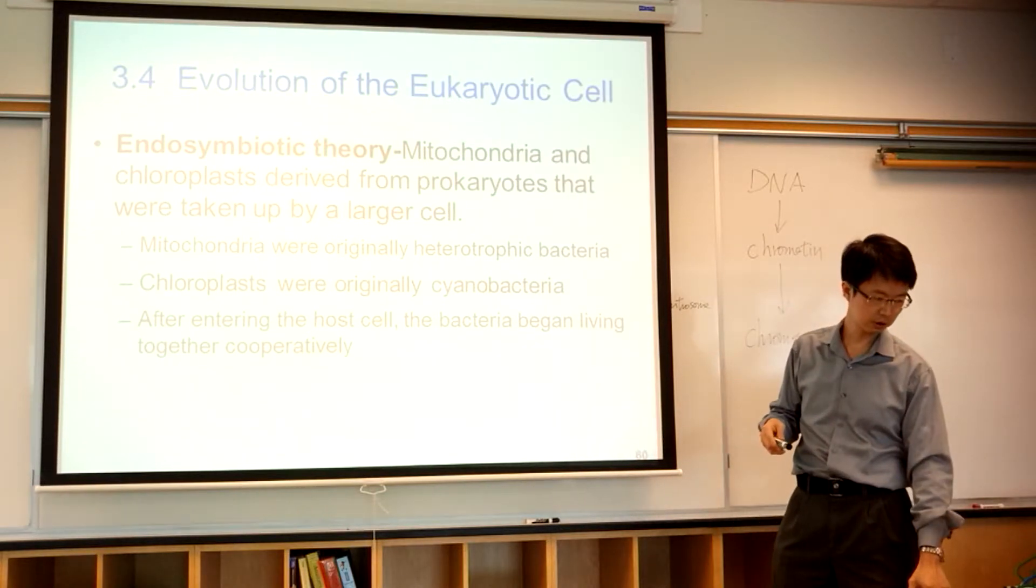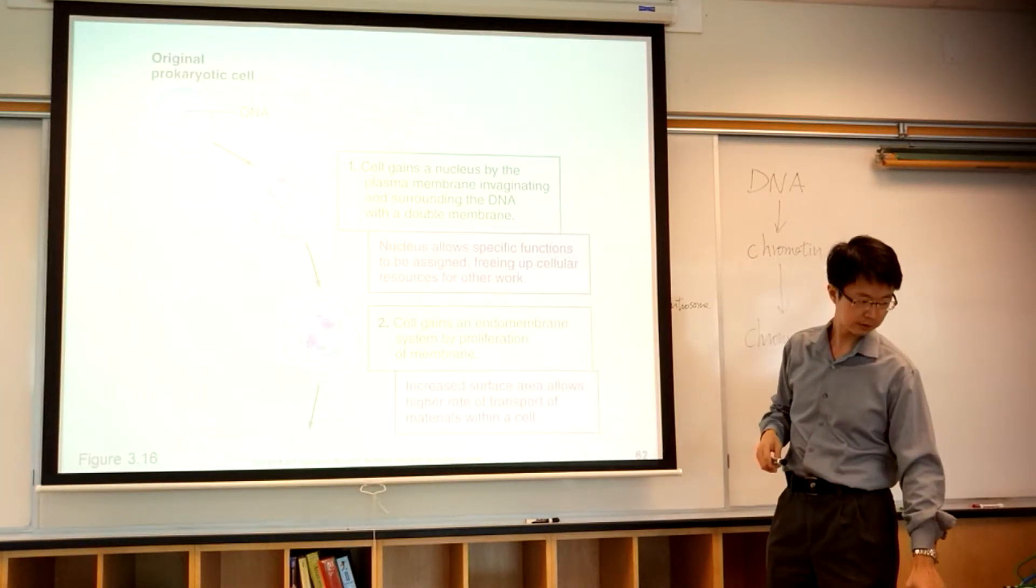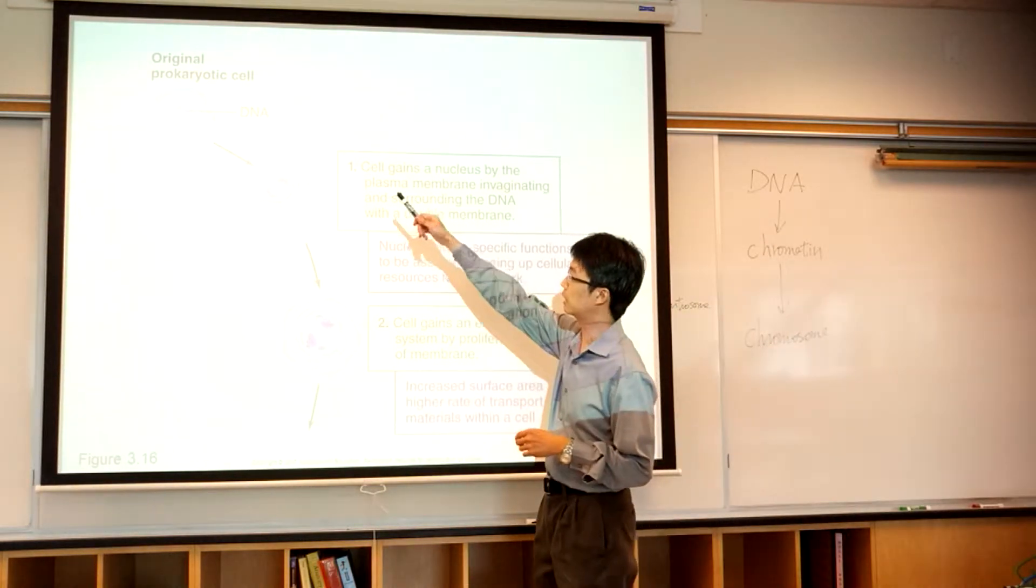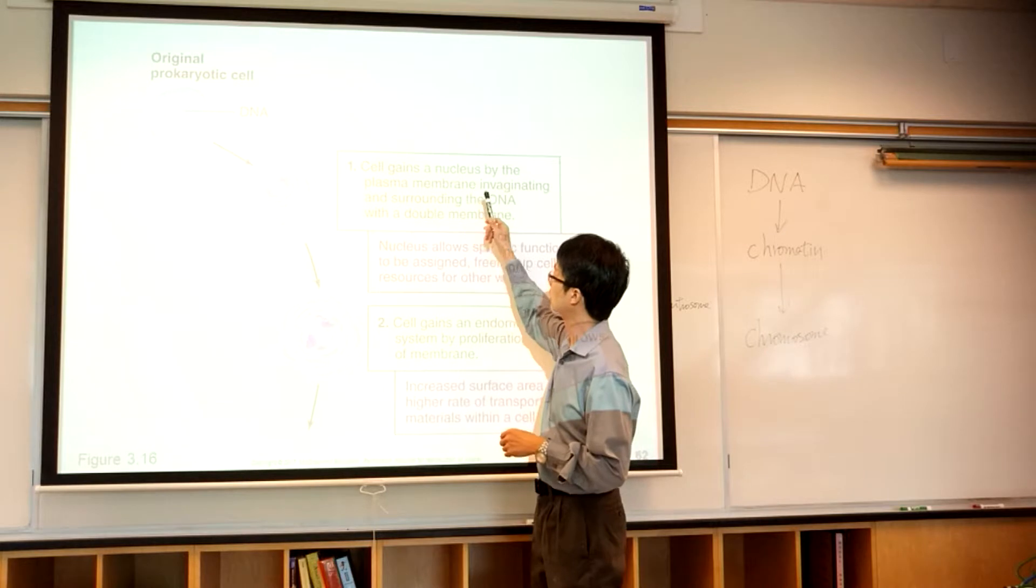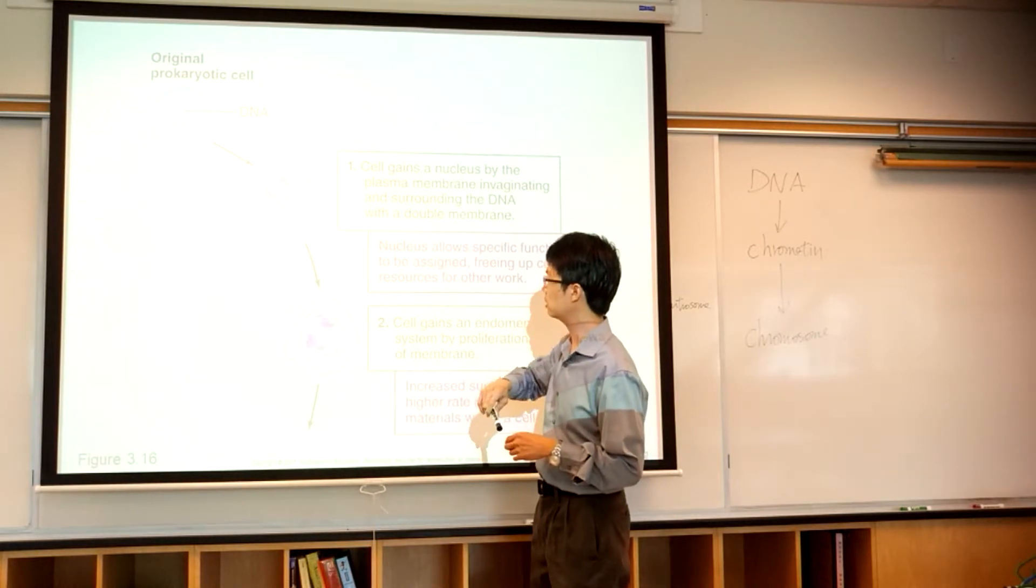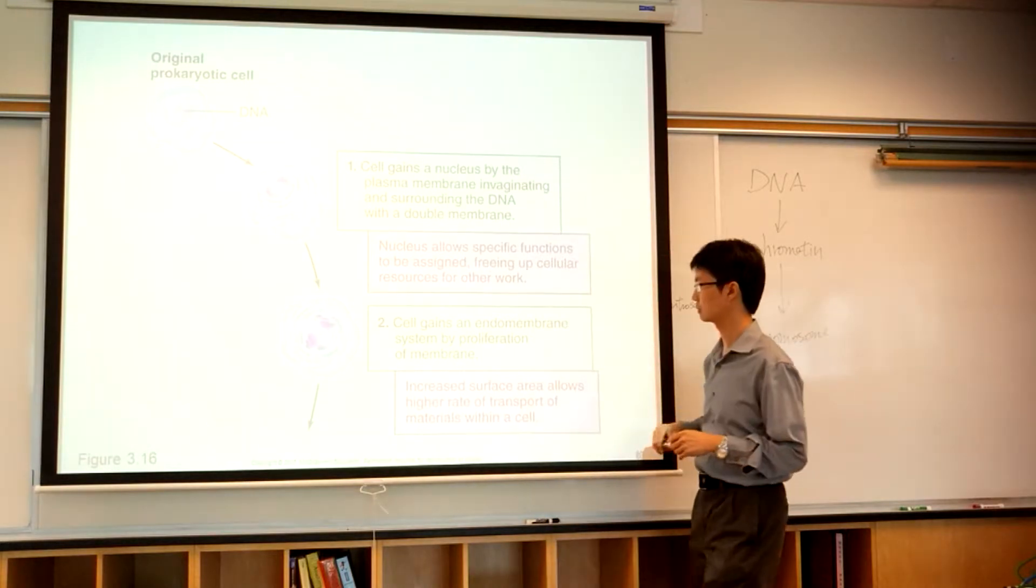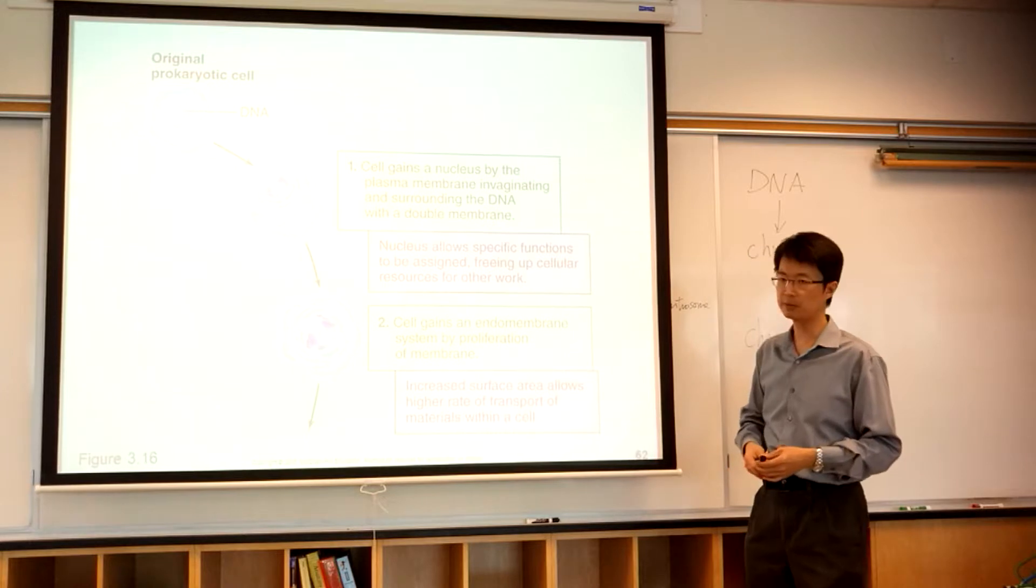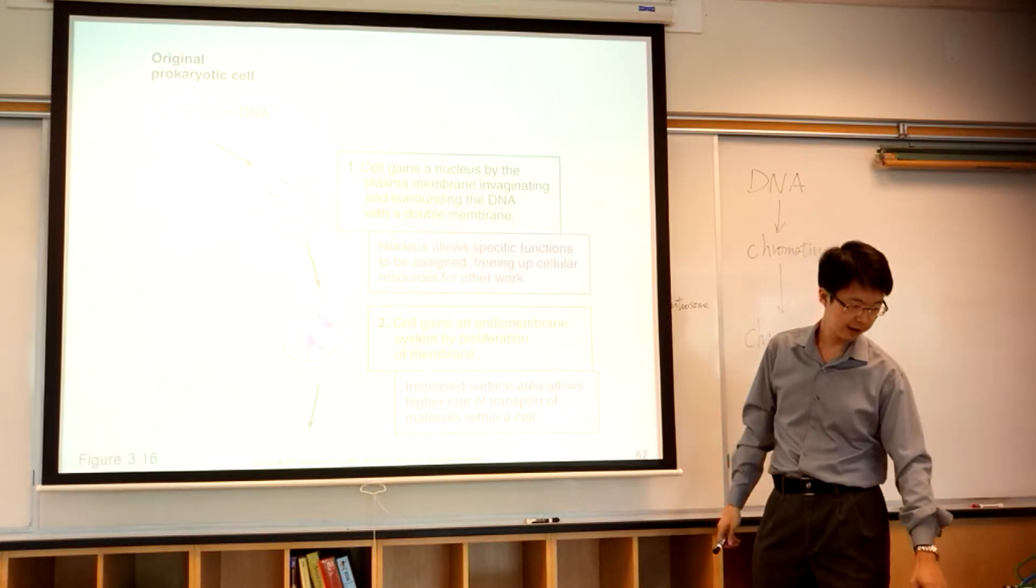Here is something that I told you before. So, the prokaryotic cell has its own DNA, and then it gains nucleus, becomes eukaryote. And then it develops the endomembrane system for secretion. Remember, secreting protein and fat.